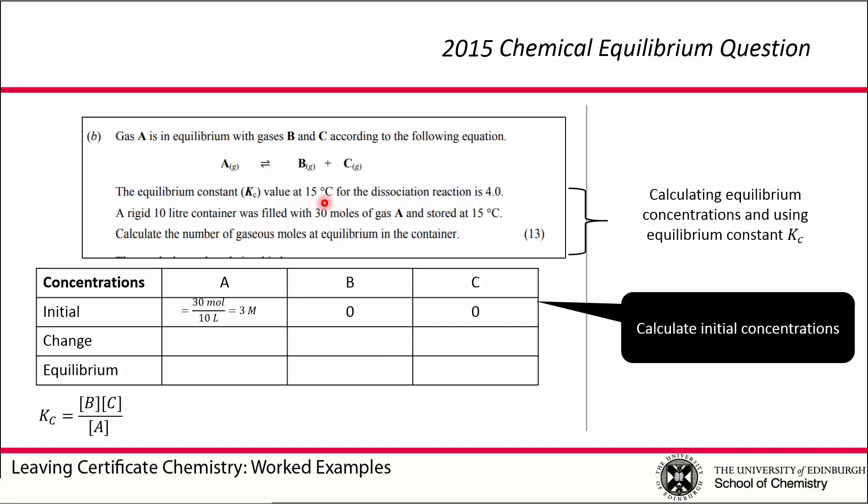We're told that the concentration of A is 30 moles in 10 liters. That means its concentration in moles per liter is 30 divided by 10, which is 3 molar or 3 moles per liter. We can assume that before the reaction starts, the concentration of B and the concentration of C, both products, are 0.